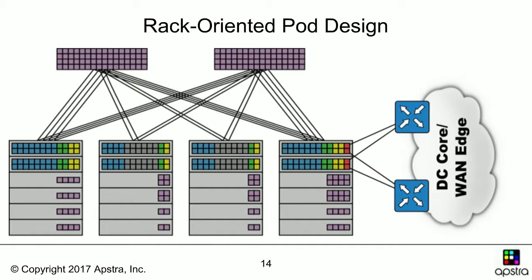Once we have rack types defined, we can design our pod. At the top we have two purple blocks representing spine switch logical devices, with some number of racks underneath of differing types. We can define the number of uplinks between each rack type and the spine — some racks have four uplinks, some have two. We also define a rack that has connectivity to the broader network, representing how the pod connects to your DC or WAN edge.